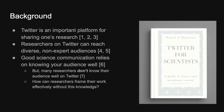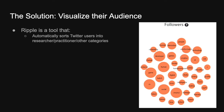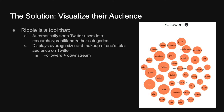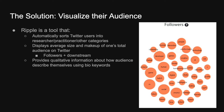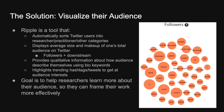The question we tried to solve is: how could researchers frame their work effectively without this knowledge? Our solution was to build Ripple, a tool that automatically sorts Twitter users into researchers, practitioners, and other categories. It can display the average size and makeup of a person's total audience on Twitter — including both their immediate followers and all the people their tweets might reach downstream through the retweet chain — to get a sense of total exposure. It also provides qualitative information about how those people describe themselves using keywords from their bio, and highlights trending hashtags and tweets among specific audiences. The primary goal was to help researchers learn more about their audience in order to frame their research more effectively.